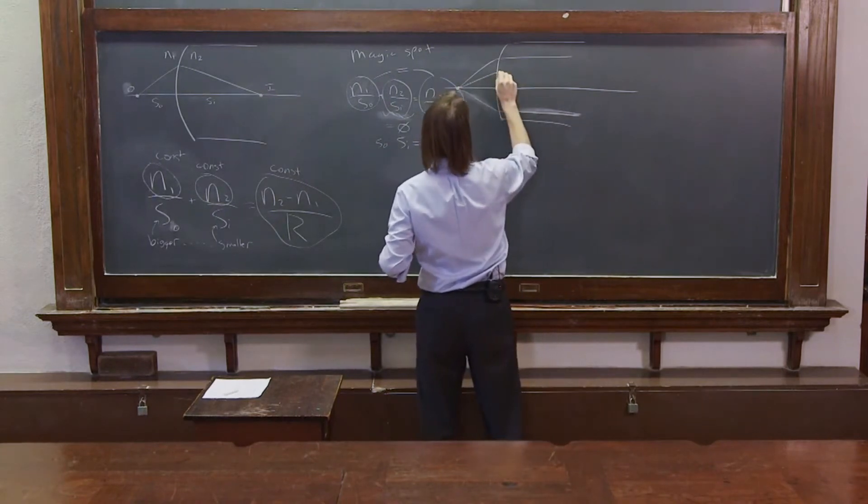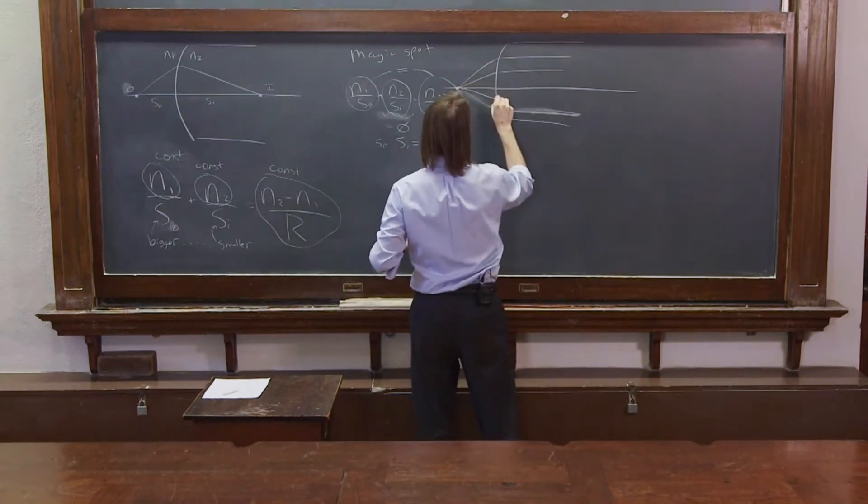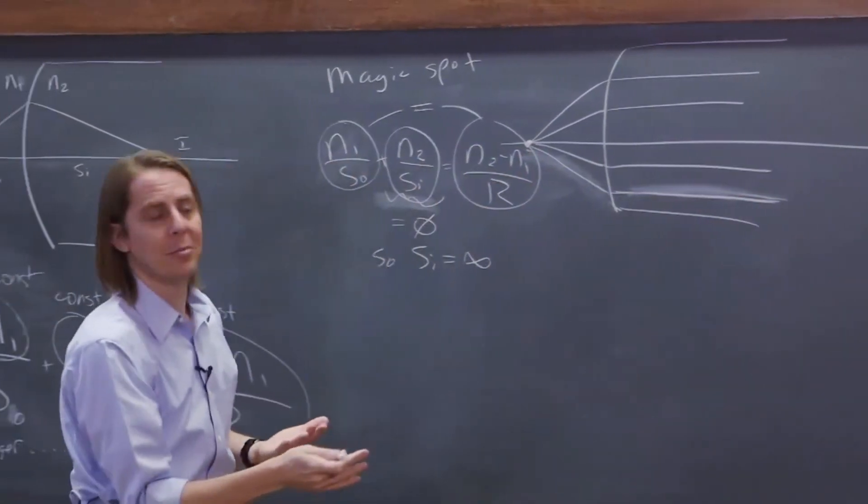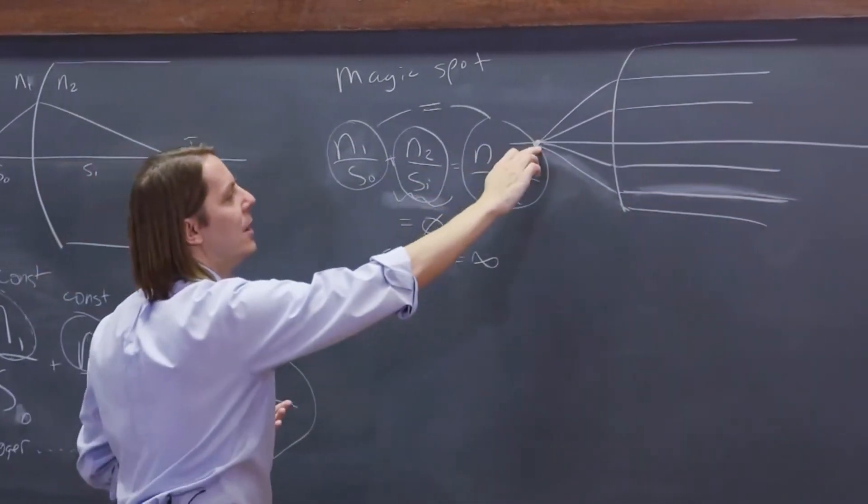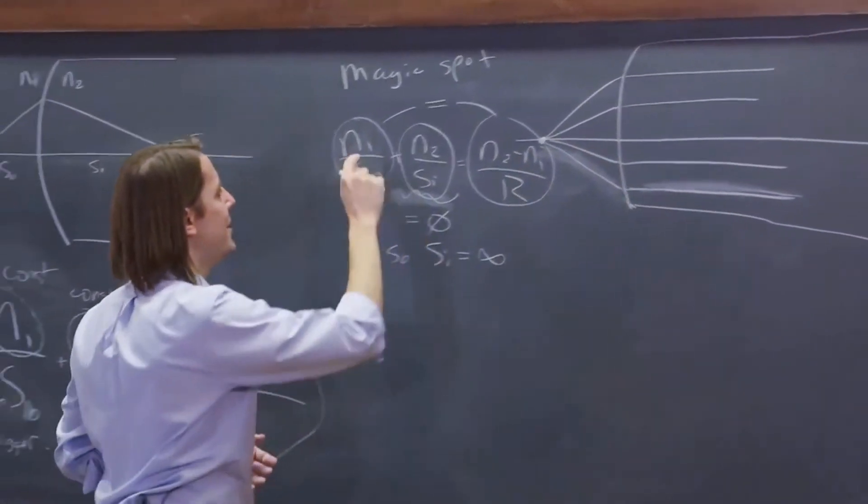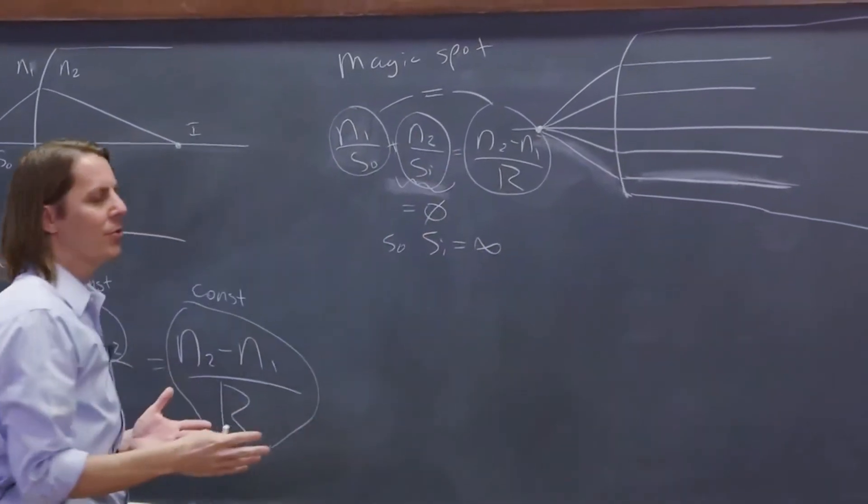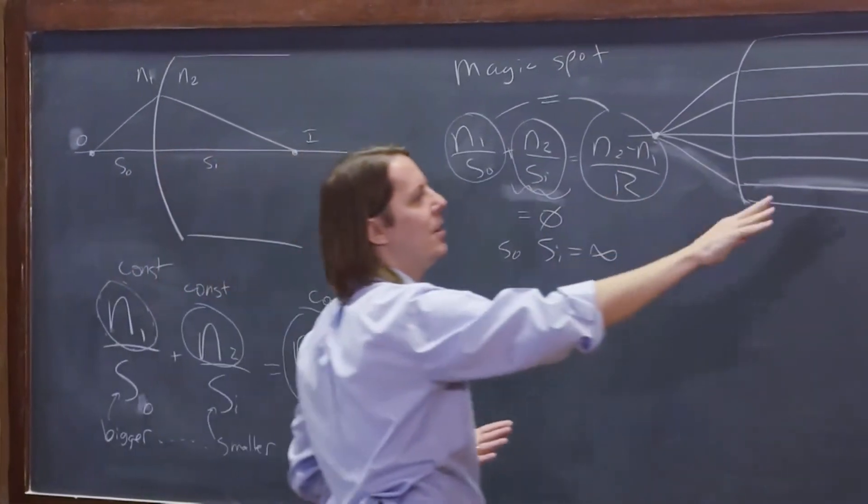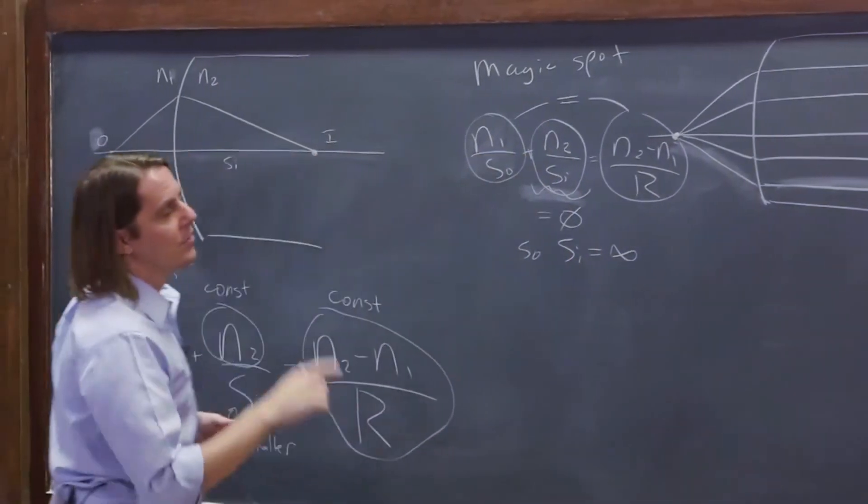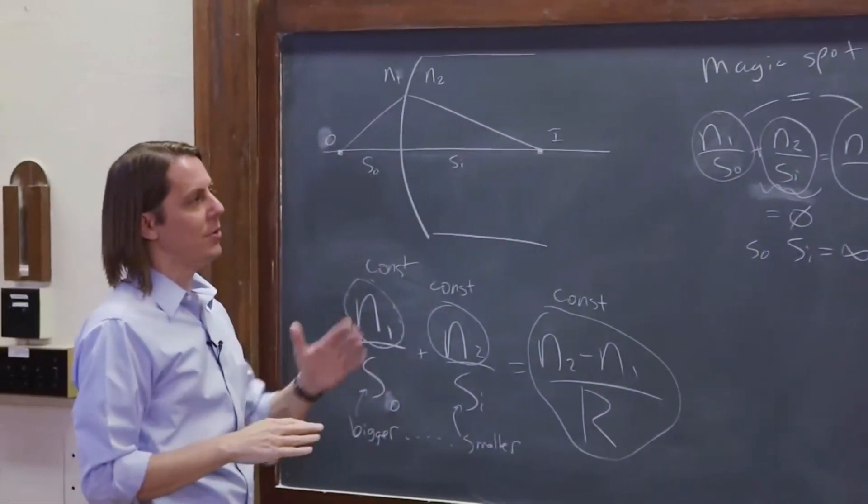And if I draw a couple more, it doesn't matter the angle. See, we used angles in our derivation, but in our answer, the angle doesn't matter. It's just a property of where this is and where the object distance is. So to make this equal this, then the only way it works is for the image distance to be at infinity, which is code word for parallel rays.